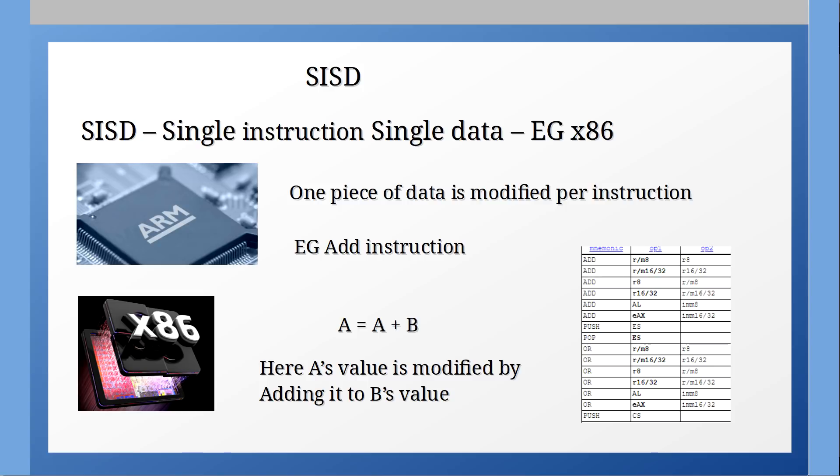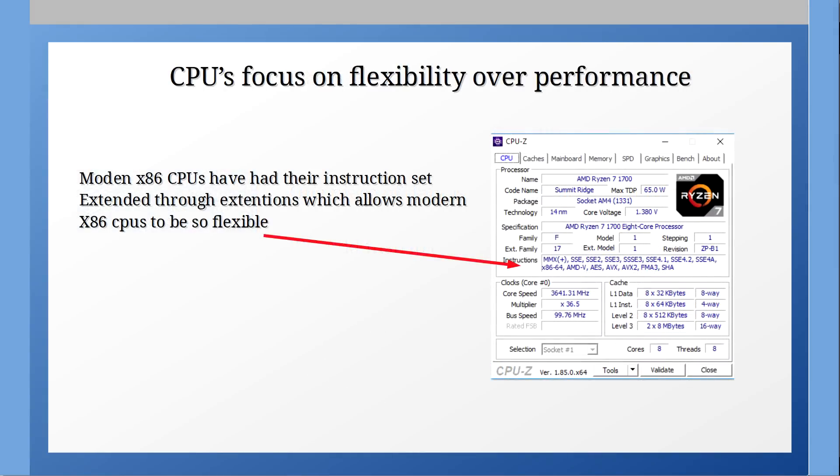x86 in its basic implementation had two types of instructions, integer arithmetic and memory instructions. There was no float instructions and so the flexibility of the processor was increased by adding new instructions like that of the x87 instruction set for floats.